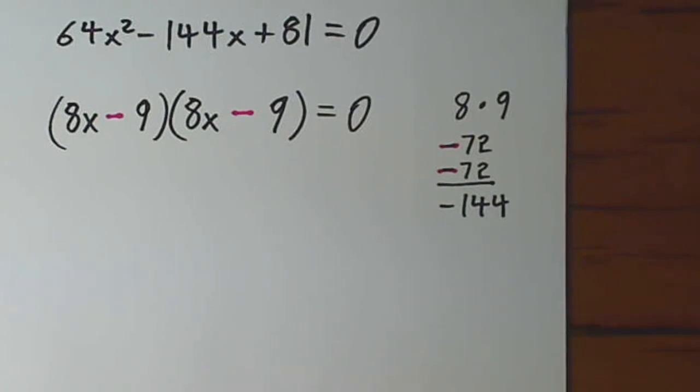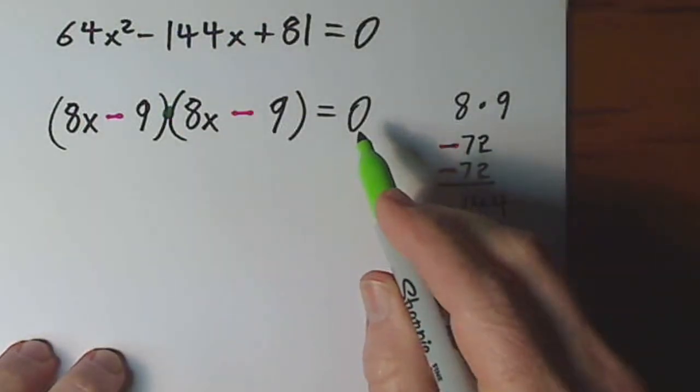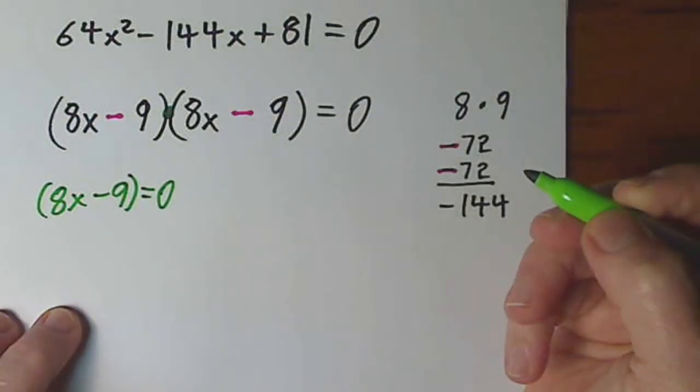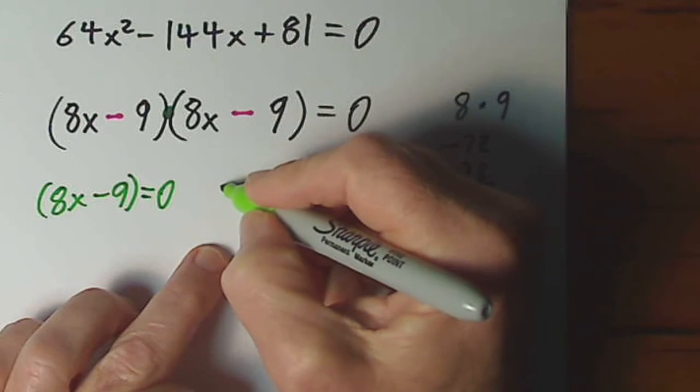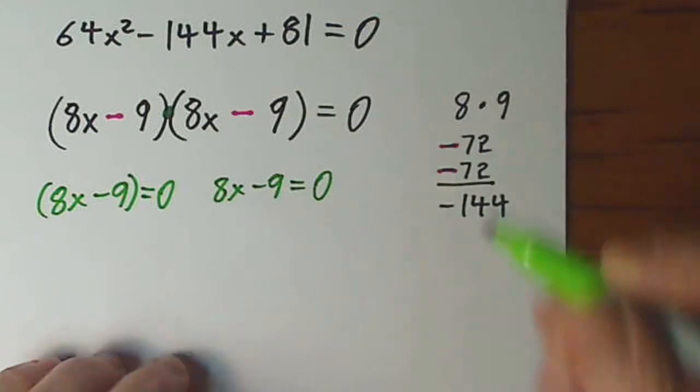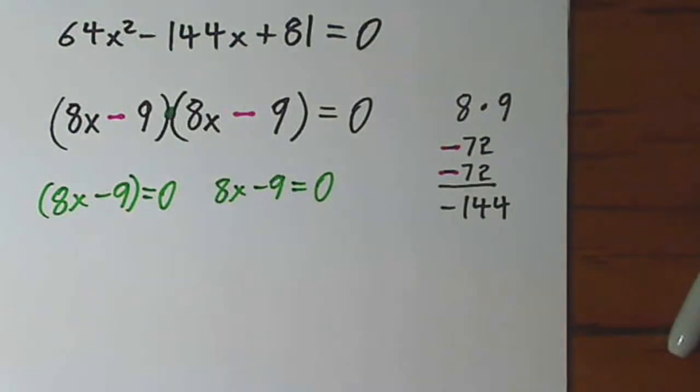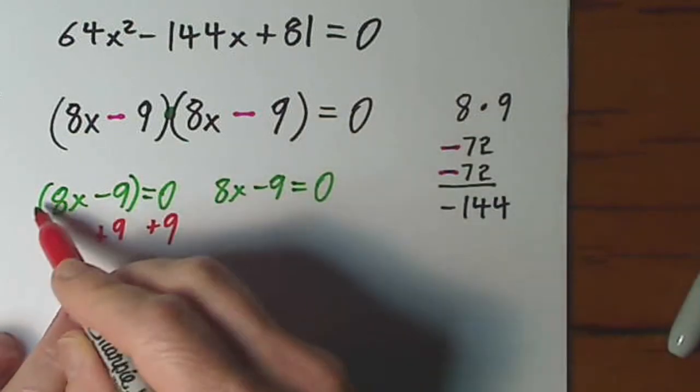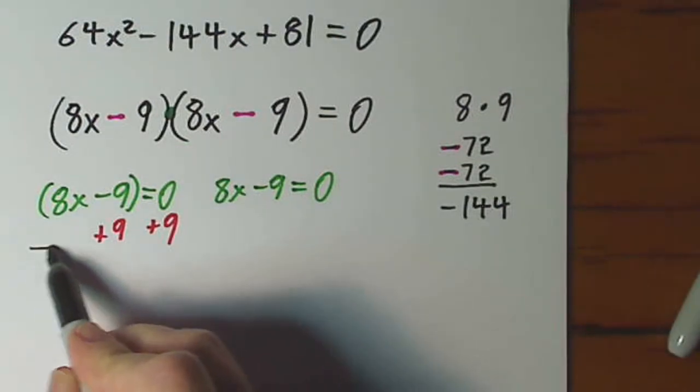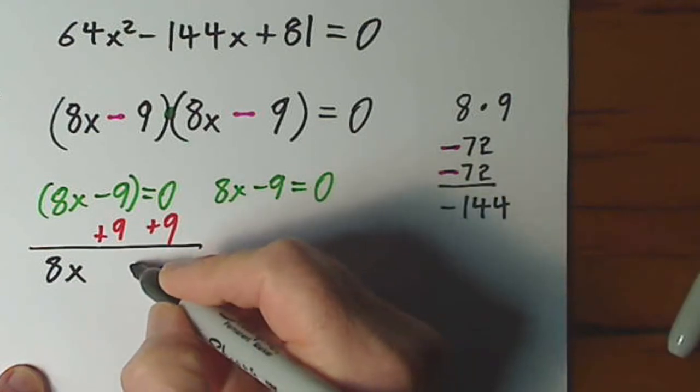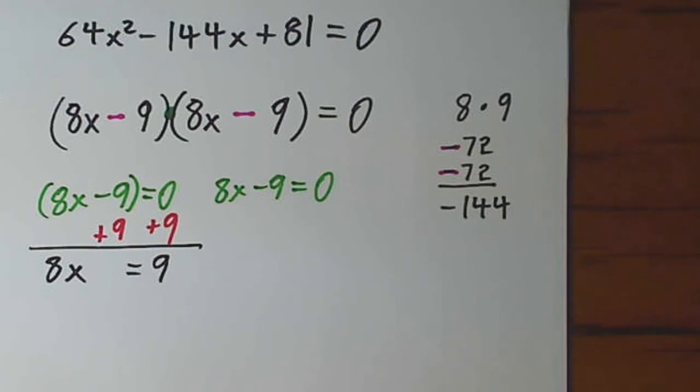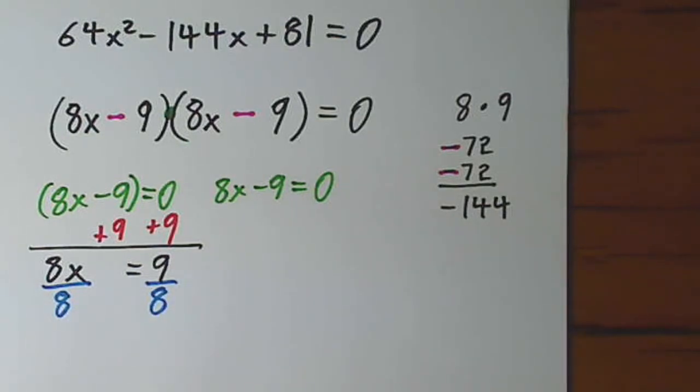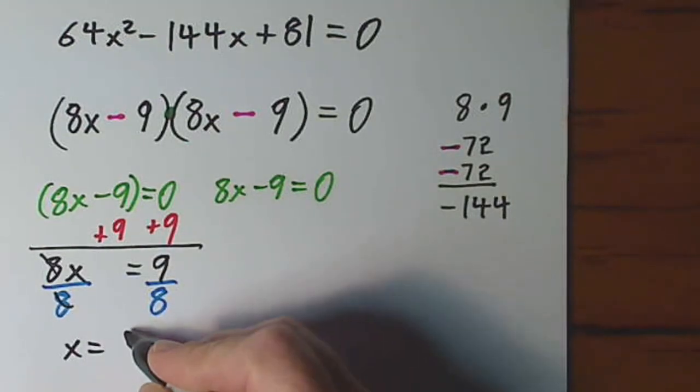I have something times something equal to 0. So I can take the first set of parentheses and set that equal to 0. I can take the second set of parentheses and set that equal to 0. I didn't really mean to include my parentheses there. All right. Now you're going to solve for x. So you will add 9 to each side. Again, I wish I hadn't written the parentheses. So you have 8x equals 9. And you need to get x by itself. So you divide by 8. Divide by 8. You have x equals 9 eighths.